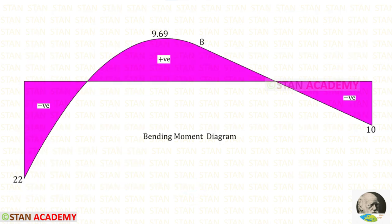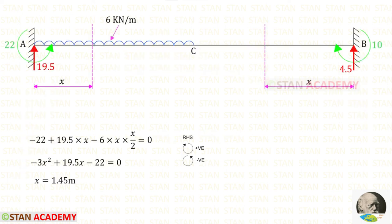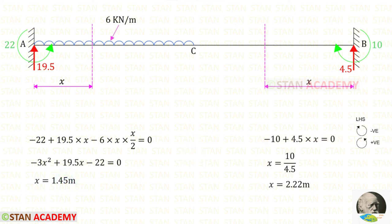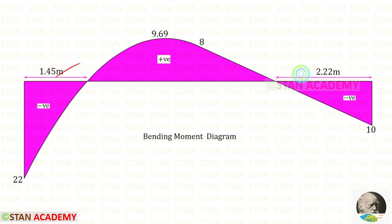Here you can see the bending moment diagram. At two points the bending moment becomes zero. We can make sections at these two points and find the distances. For the left side point, a section is made at distance x from point A; for the right side point, at distance x from point B. Using the right hand side rule, x = 1.45 meters, and using the left hand side rule, x = 2.22 meters.